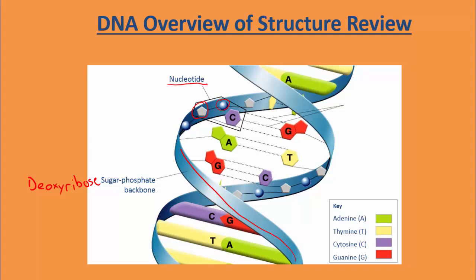We have four nitrogen bases: adenine, thymine, cytosine, and guanine. As a review from yesterday, C always pairs with G, and A always pairs with T. The pairing that occurs between these bases — adenine and thymine, or cytosine and guanine — happens via hydrogen bonds. So that's just a review of the structure of DNA.